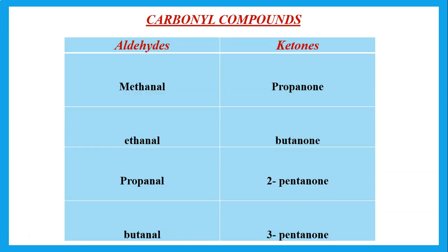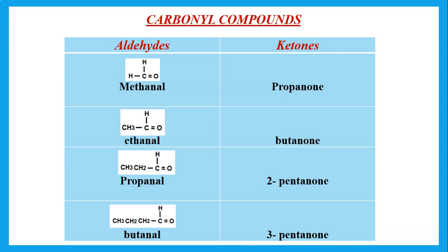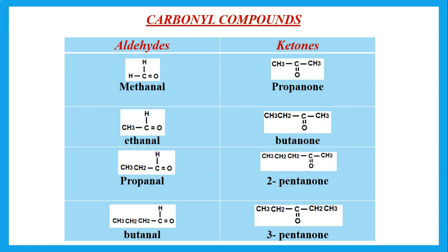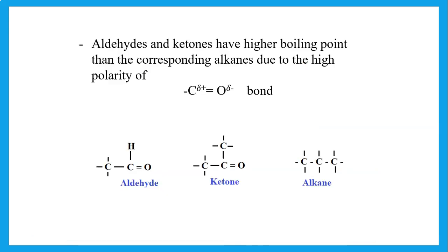Aldehydes have a carbonyl C=O at the end of the chain: methanol, ethanol, propanol, butanol. Ketones have the carbonyl C=O in the middle of the chain: propanone, butanone, pentanone — for example 2-pentanone and 3-pentanone. Aldehydes and ketones have higher boiling points than the corresponding alkanes because aldehydes and ketones have permanent dipole-dipole interactions between their molecules, while alkanes have only the very weak London dispersion or van der Waals forces.